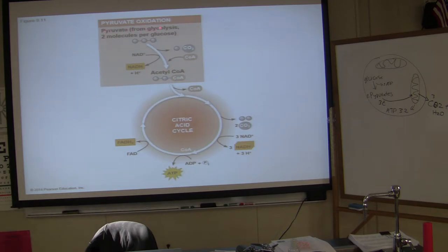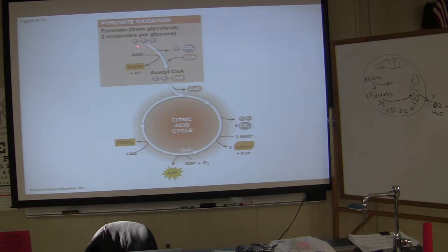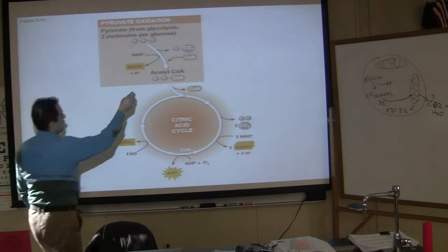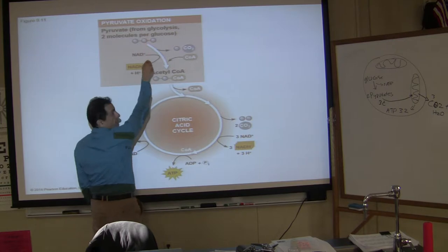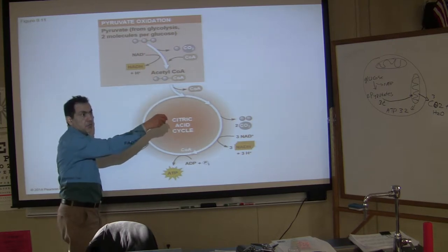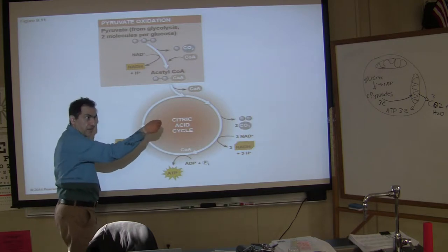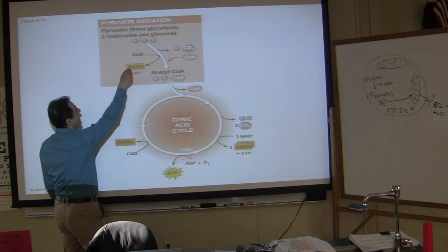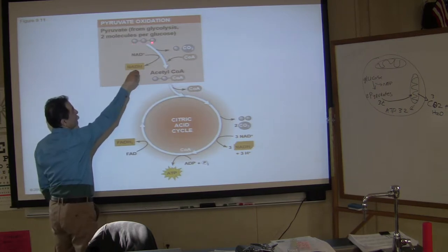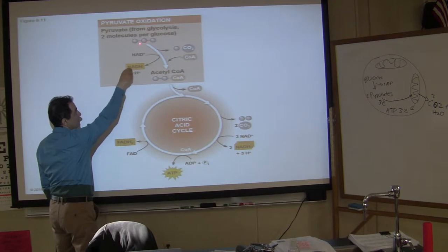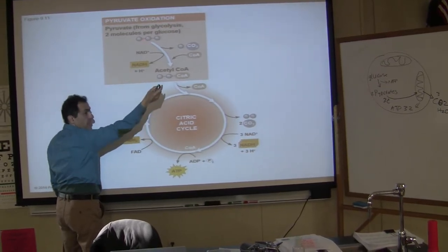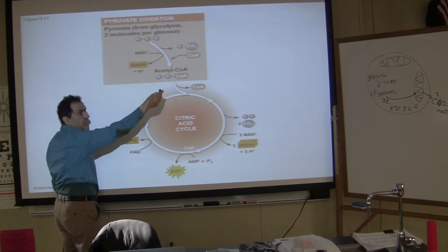Pyruvate oxidation: pyruvate comes from glycolysis, two molecules per glucose — one glucose molecule gives you 2 pyruvate. The circles in the diagram indicate carbons. Pyruvate has three carbons. It turns into acetyl-CoA, which has two carbons, and you get one NADH from it. There is also a CoA molecule — a coenzyme — that attaches to these two carbons, and one of those carbons becomes carbon dioxide.